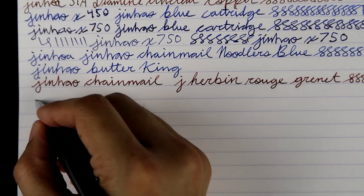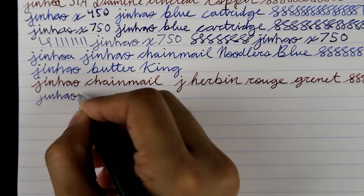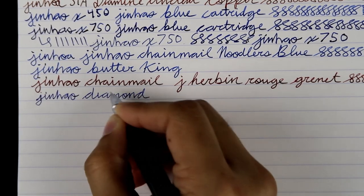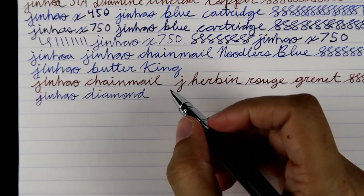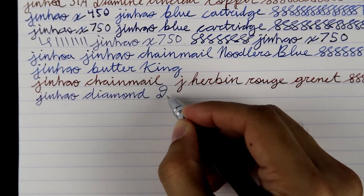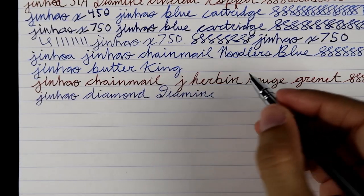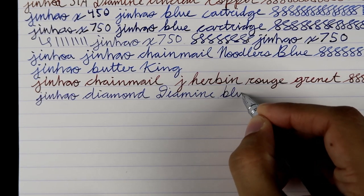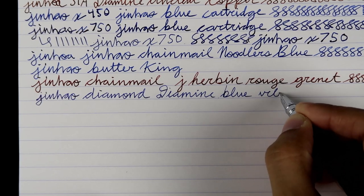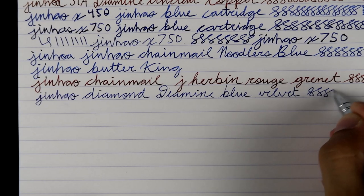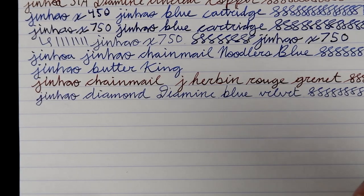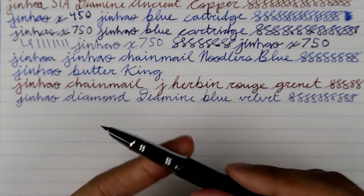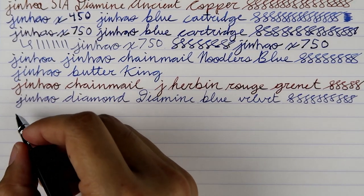What is in here, let's see. Jinhao Diamond. This I believe has Diamine Blue Velvet. Might be running out of ink, so I'm skipping a little bit. This is another one of the butter king beasts. It's so light, so smooth. You can't go wrong with this.